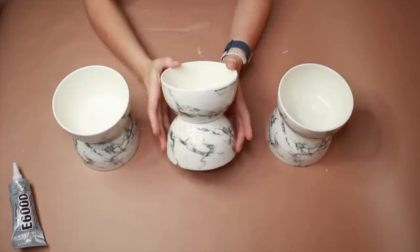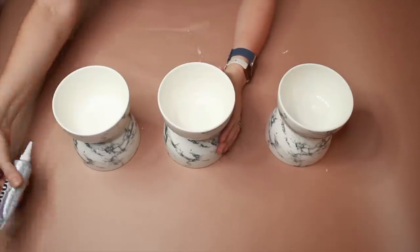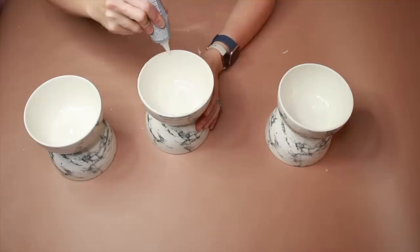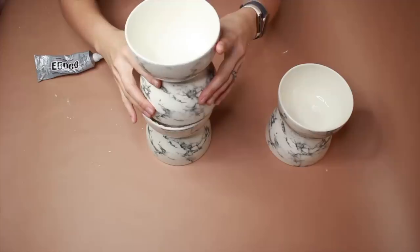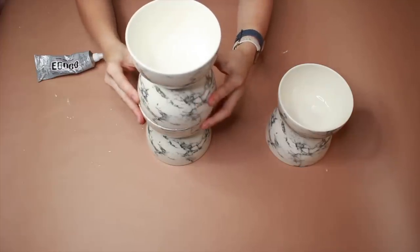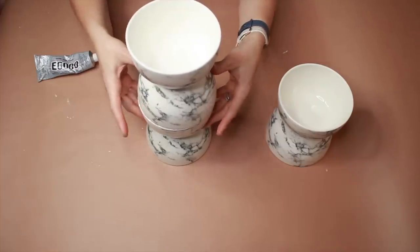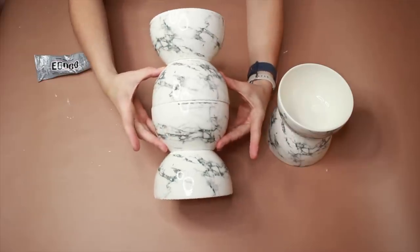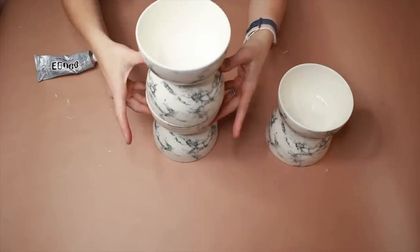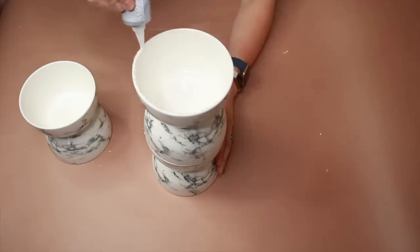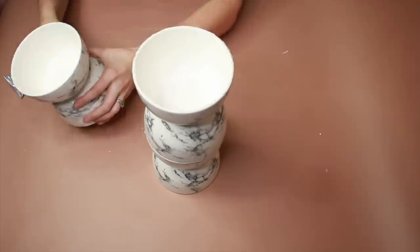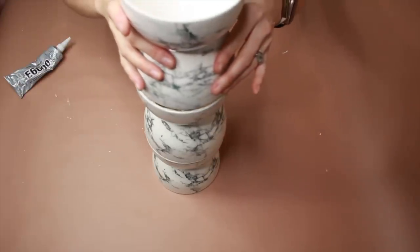Alright, now that we've let these dry a little bit, what I'm going to do next is I'm going to be taking my E6000 and I'm going to go around the top of this. Alright, so we're going to stack it on top, make sure it's centered. So this is kind of what we're looking like right now. And we're going to do this one more time. And so we're going to come back when all of these are stacked on top of each other.